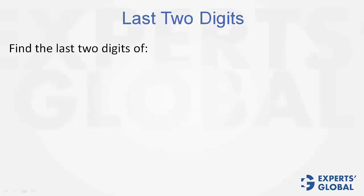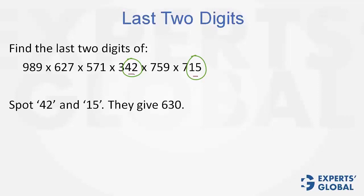Find the last 2 digits of this one now. What friendly numbers do you see? 42 and 15. So spot 42 and 15.